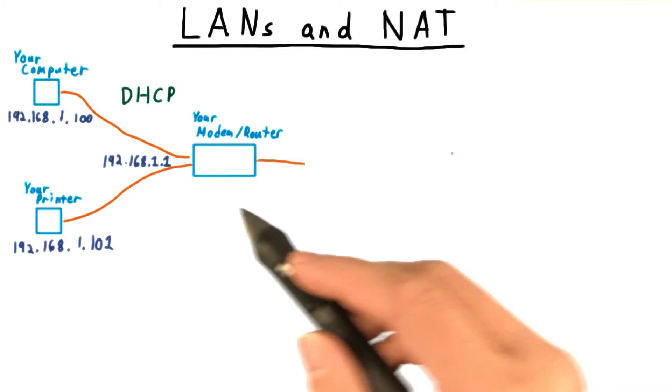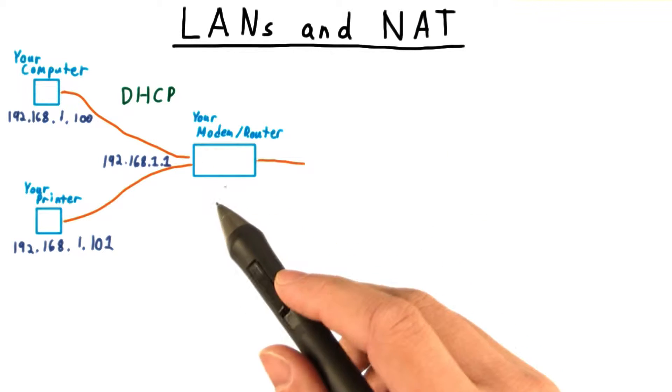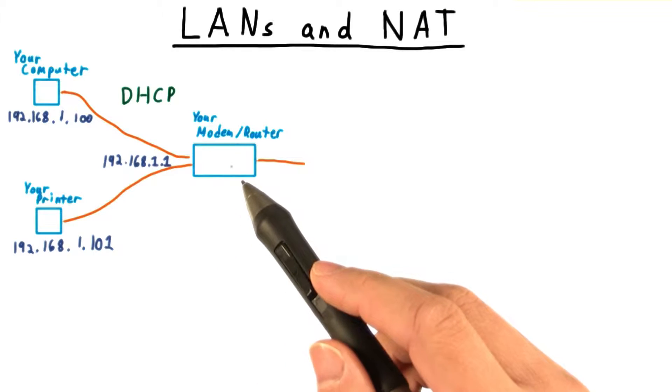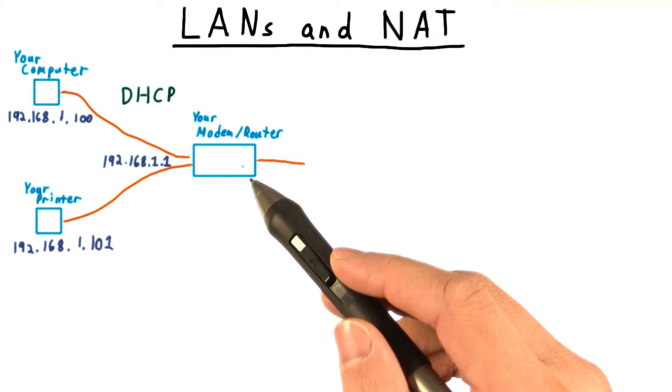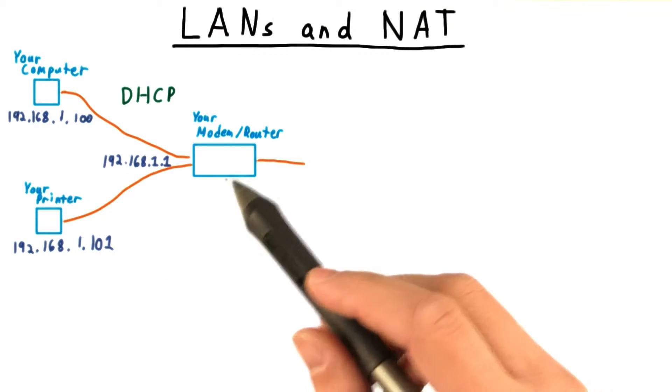To be concrete and simple, let's suppose that you have a combined modem slash router connected to the internet in your home. Now within your home, you can create a private IP network using the network ID reserved for such a situation. Specifically, anything that starts with 192.168.